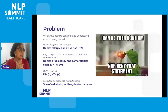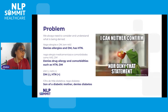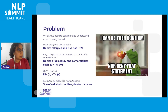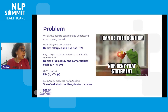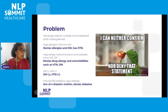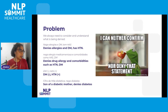One of the problems is negations of certain terms. The first example is denying allergies and DM (diabetics), but the patient has hypertension. The second one denies drug allergy and comorbidities such as hypertension and DM. The third is another example of denying things in such texts — denying DM but affirming hypertension. And in the last one, the mother has diabetes, but the patient denies having it. So if we don't understand the context and just look for the word, we are not able to extract this information correctly.